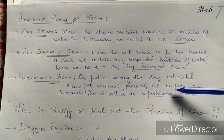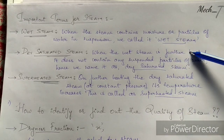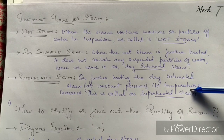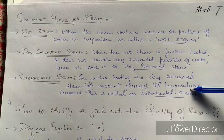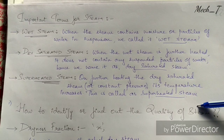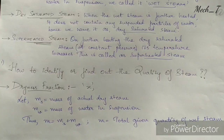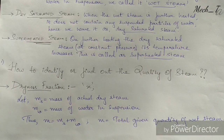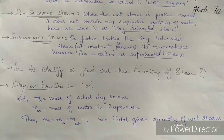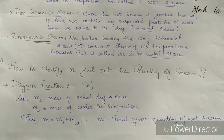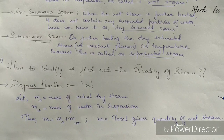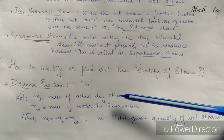Now that we know the concepts of wet steam, dry saturated steam, and superheated steam, what is the criteria to determine the type of a given sample of steam? To identify the quality of a given sample of steam, we have a concept called dryness fraction.